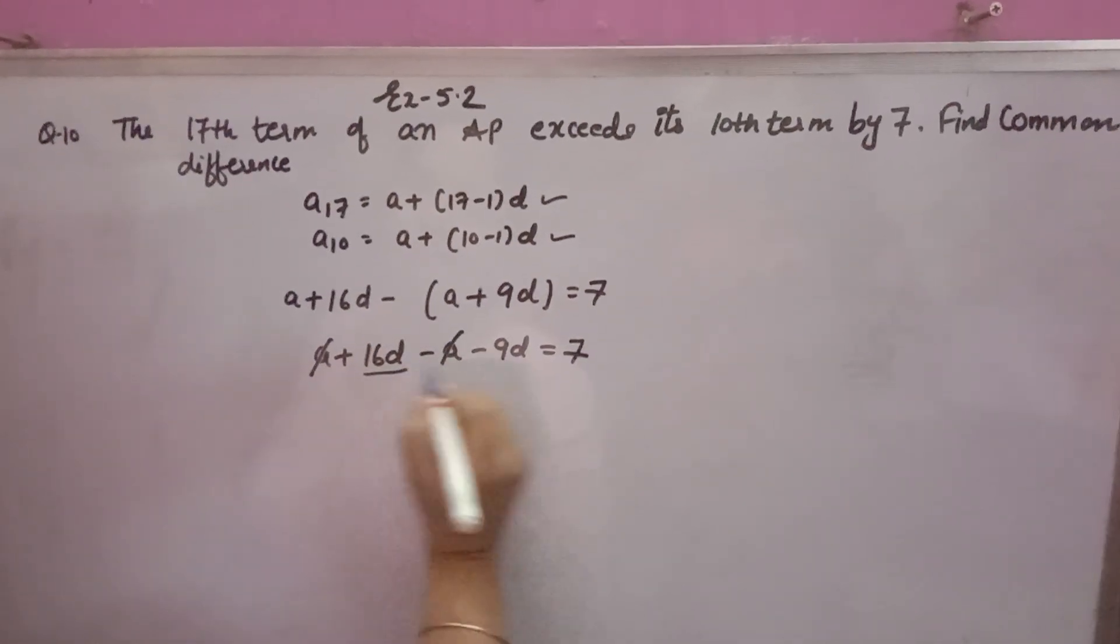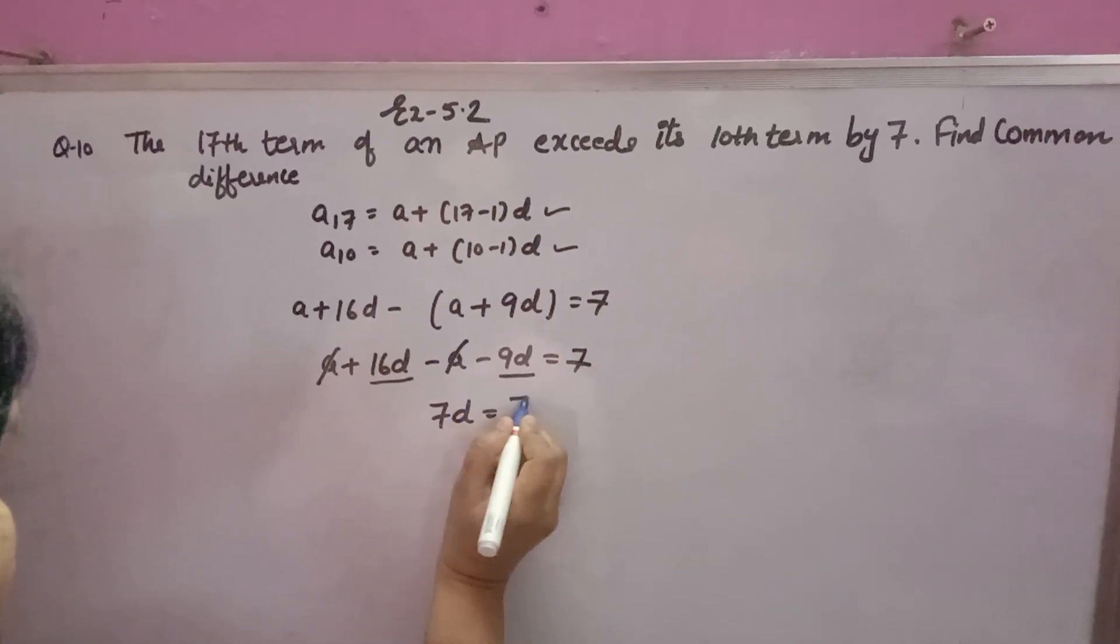A minus A is zero, you can cancel. 16D minus 9D is equal to 7.